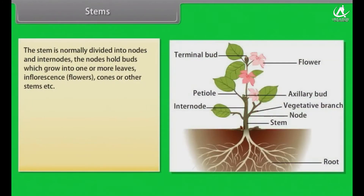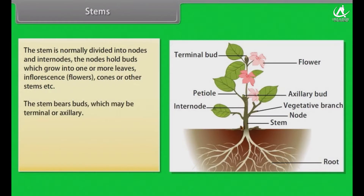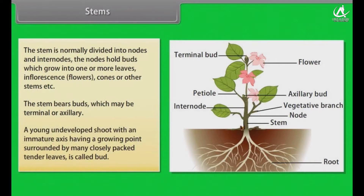The stem is normally divided into nodes and internodes. The nodes hold buds which grow into one or more leaves, inflorescence flowers, cones or other stems. The stem bears buds which may be terminal or axillary. A young undeveloped shoot with an immature axis having a growing point, surrounded by many closely packed tender leaves, is called a bud.